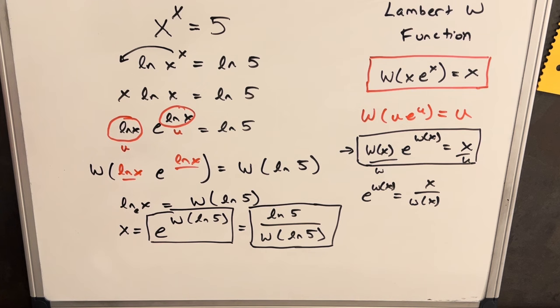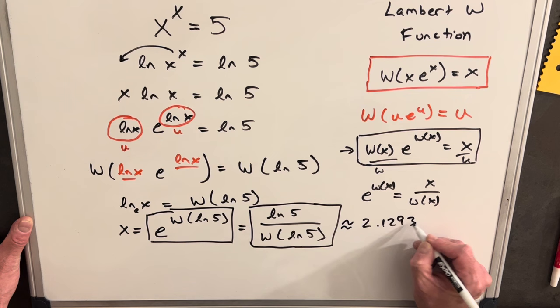And then now your question might be, okay, so what is this thing that we just found? We have a calculator to calculate ln 5, but how do we calculate Lambert W of ln 5 to actually get some kind of numerical answer? Well, there's not a good way on a calculator. I don't know of a calculator that has a Lambert W button. But anyway, if you put this into Wolfram Alpha, you'll get an answer approximately 2.12937.